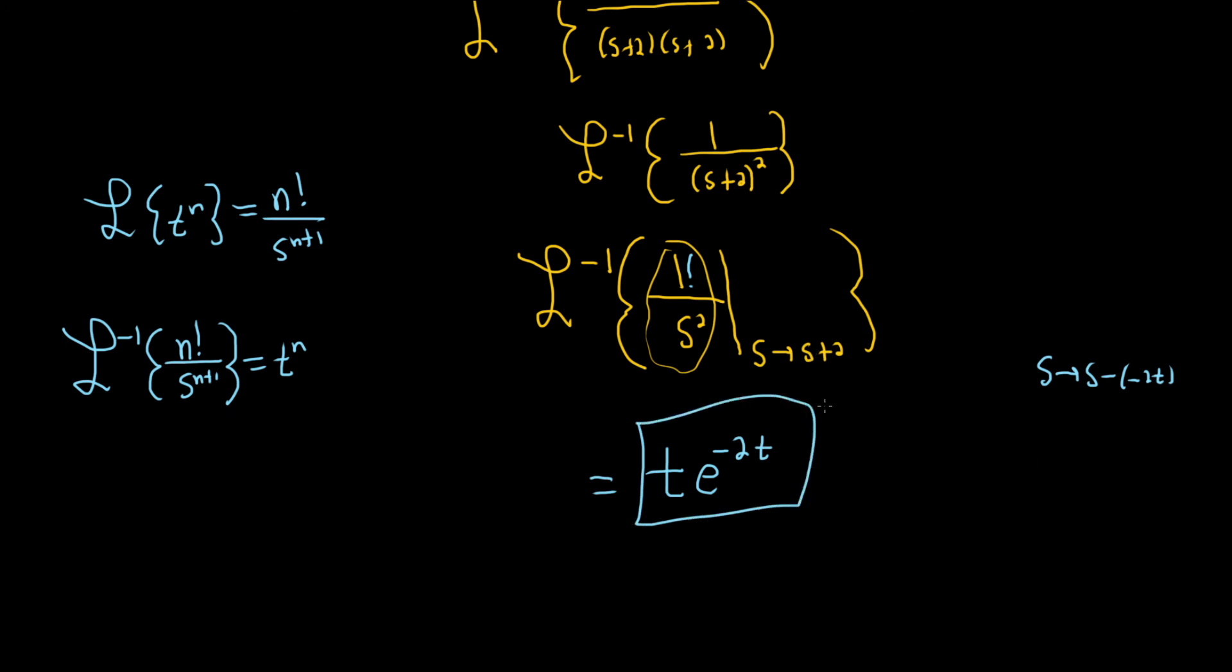So if it was like s to s minus 2 would be 2. If it's s to s minus 3 it's e to the 3t. If it's s to s plus 4 it's e to the negative 4t. So that's it.